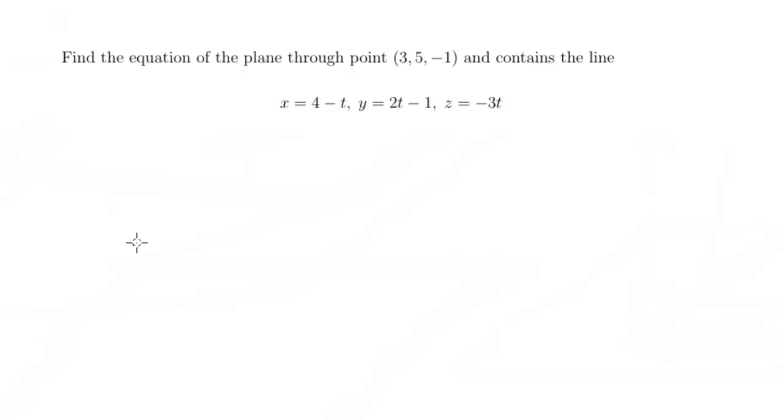Okay, in this problem we're going to find the equation of a plane that goes through the point (3, 5, -1) and contains the following line. They give you the parametric equations right here.